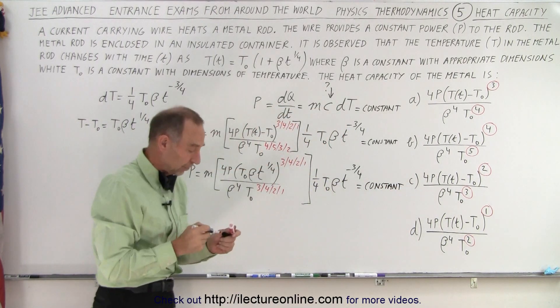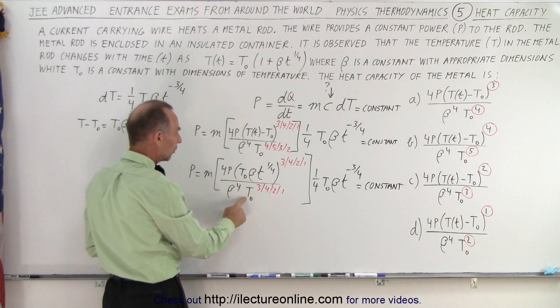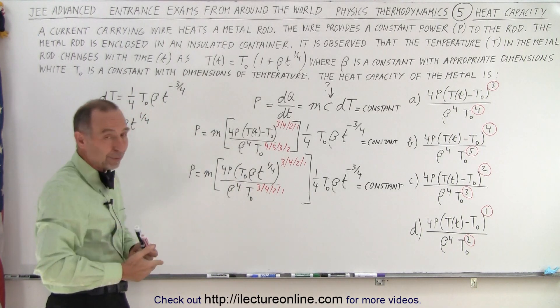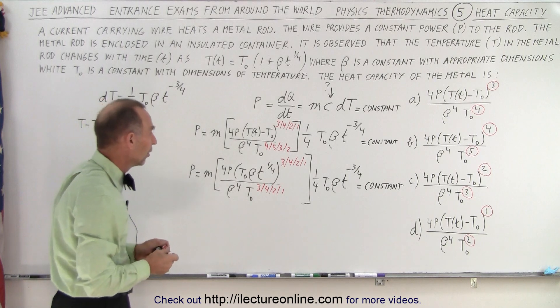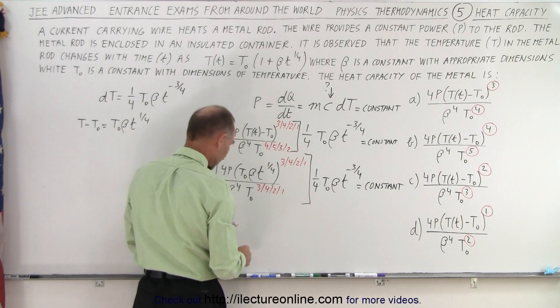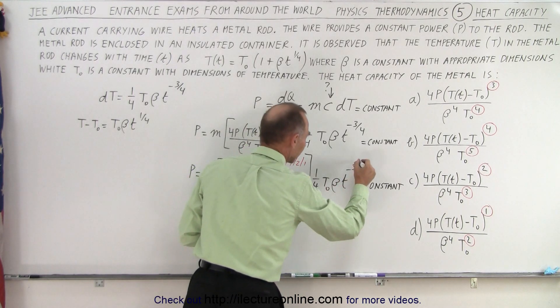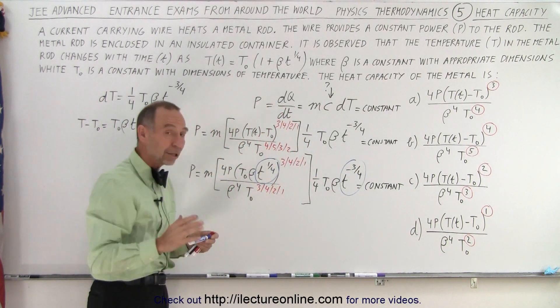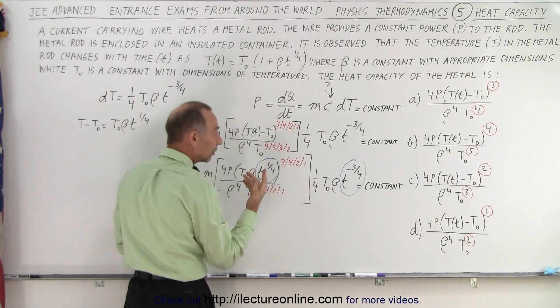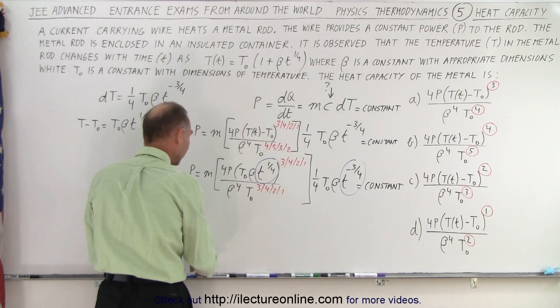Times one quarter T beta t to the minus three quarter, and that should be a constant. Now they tell us that beta is a constant, T naught is a constant, so it doesn't really matter what the exponent is of beta and T sub naught because they're both constant. So you can raise them to any exponent, they're still a constant. But what isn't a constant is the t to the one quarter and the t to the minus three quarters.